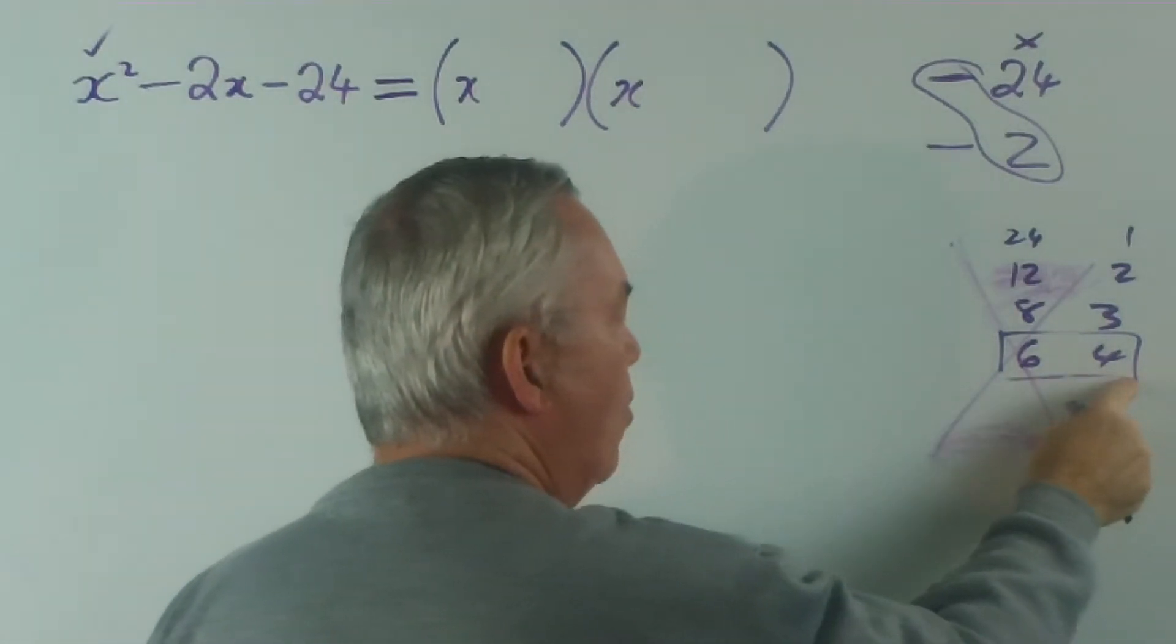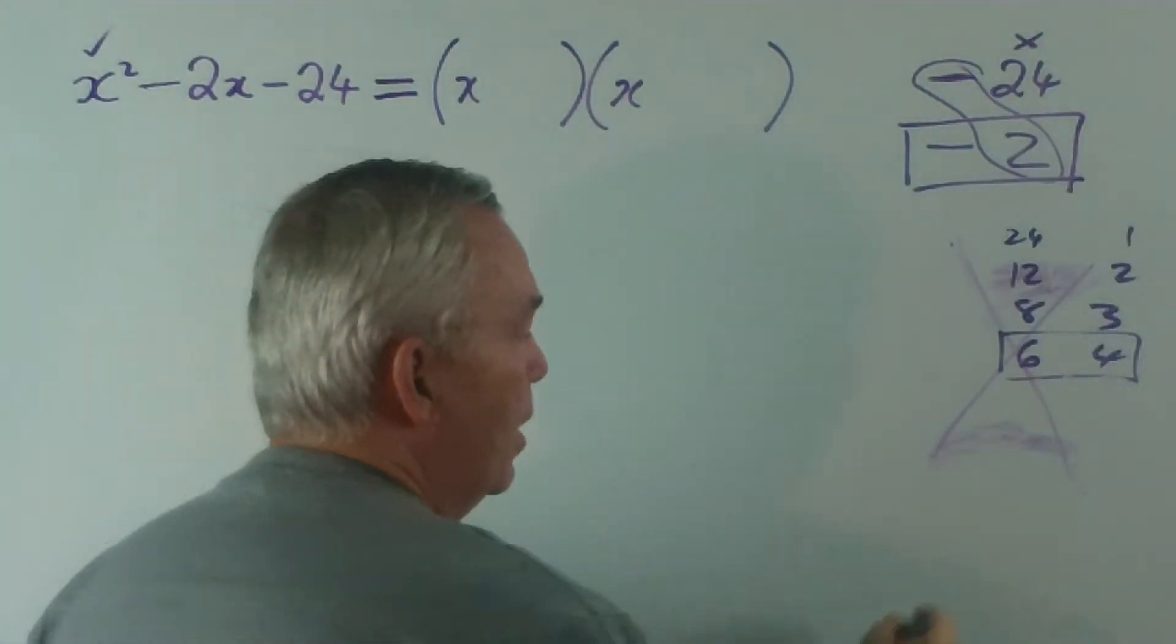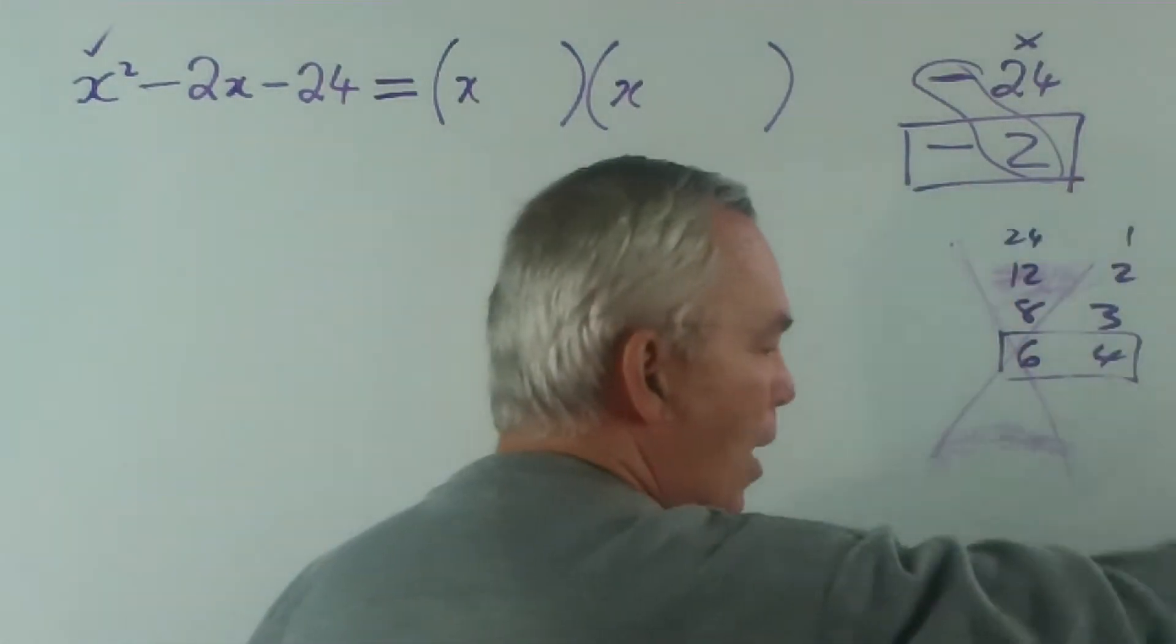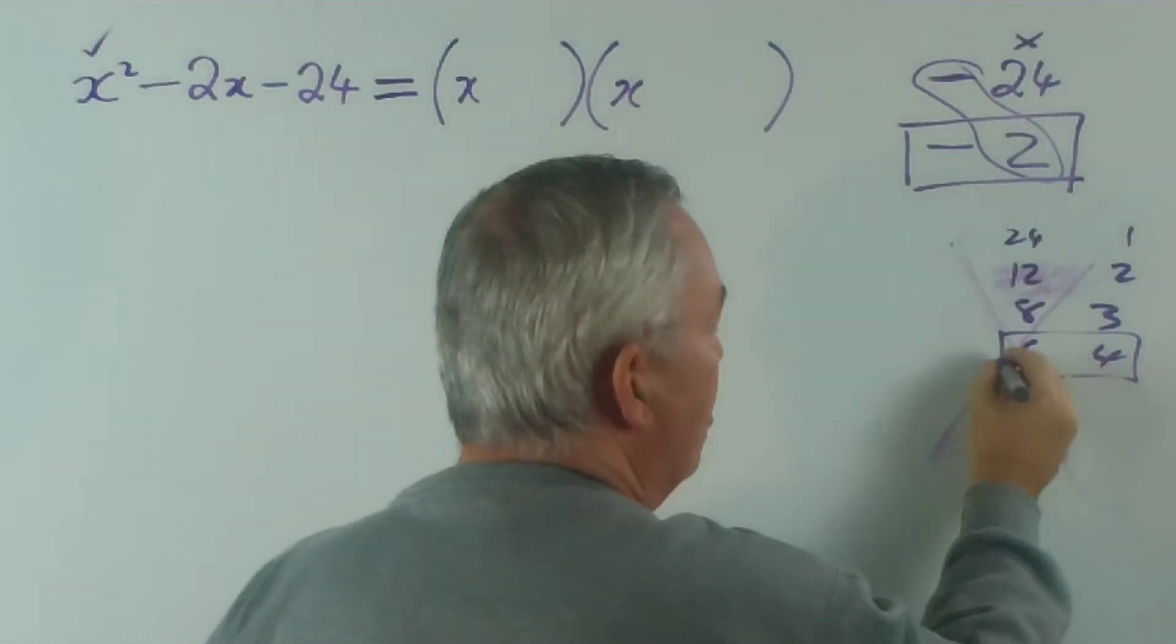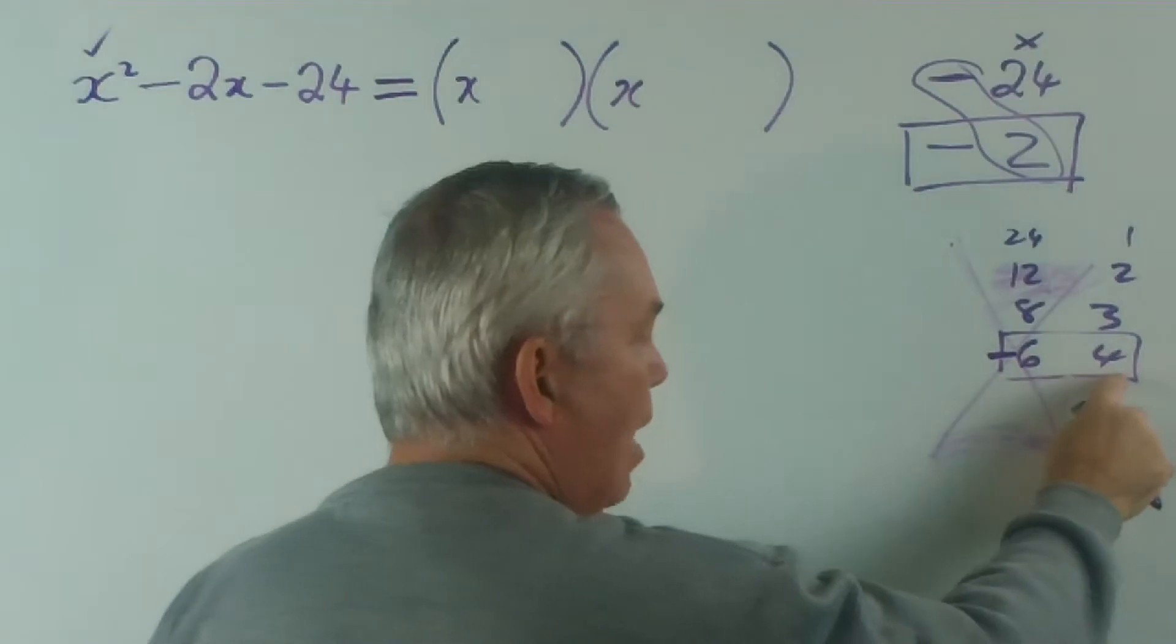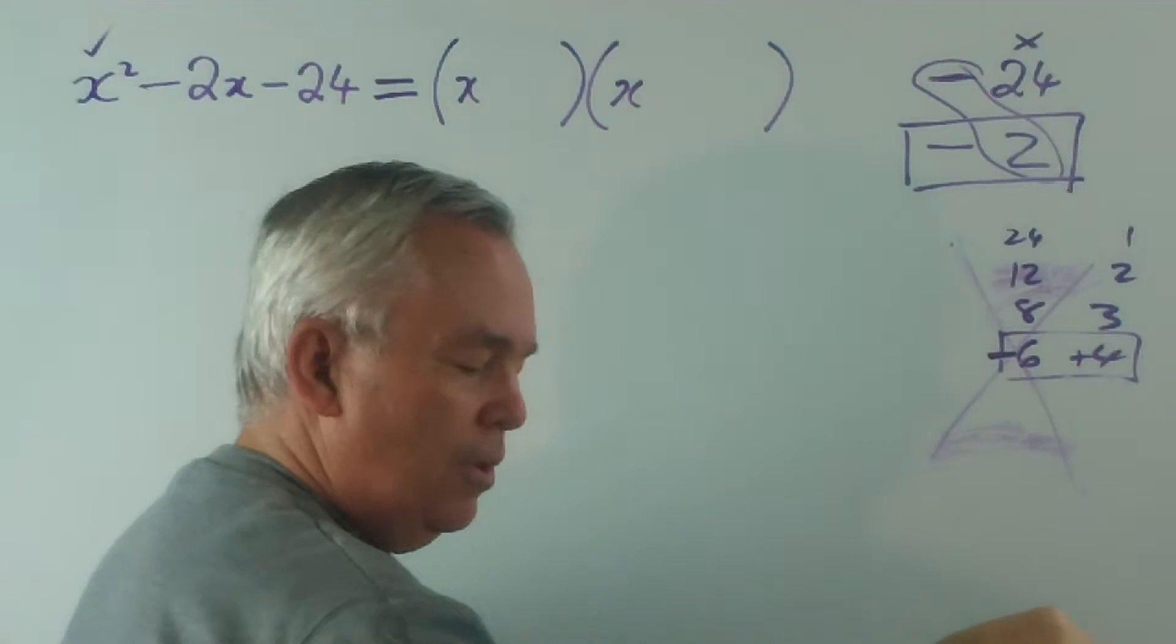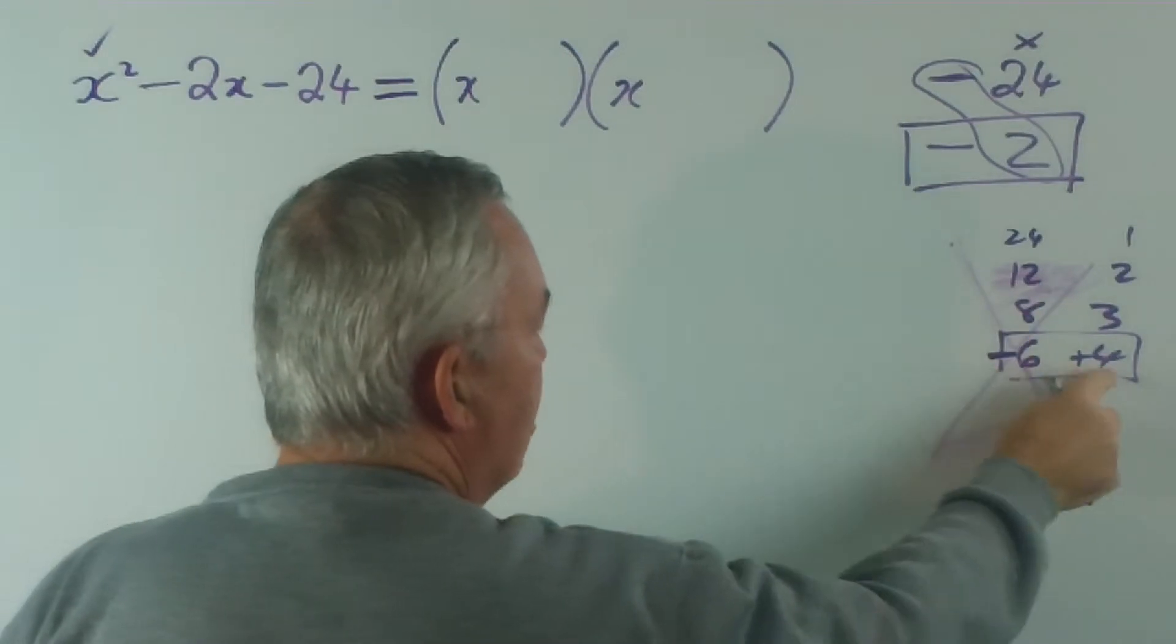Now, once we've identified the 6 and the 4, we then ask the question: how do they give me that minus 2 in the middle? Well, if we have a negative, whatever the sign is, whether it's positive or negative, the biggest number has to have that sign. So if it's a positive number, we have to get way up in the positives first. If it's negative, we have to get way down in the negatives. So if it's a negative 2, the 6 has to be negative. And now we ask the question: do we come back up 4 or go down another 4 to get to minus 2? Well, minus 2 is minus 6 plus 4. If we went minus 6 minus 4, that would take us way down to minus 10. So our combination is minus 6 plus 4.